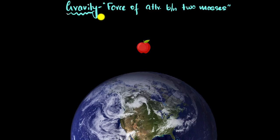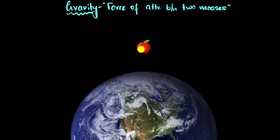So what is gravity? Gravity is a force of attraction between any two masses in the universe. For example, Earth has mass and this apple also has a mass — clearly the drawings are not to scale. But since both of these have masses, they will attract each other, and this is the force of gravity.